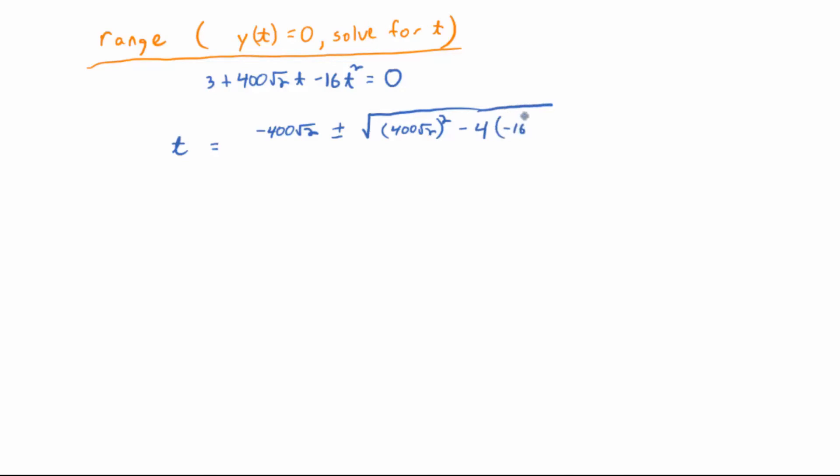So 400 radical 2 squared minus 4ac. So what's a in this case? Well, yeah, negative 16. And then c is actually, in the order I wrote it, it's all backwards from what you might be used to, right? So it's 3, right? Everybody buy that? And then all over 2a, which would be negative 32.